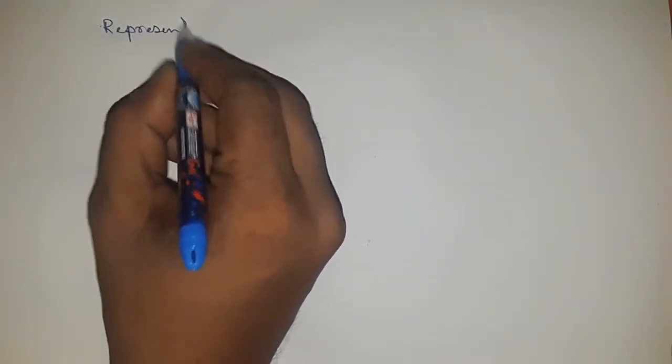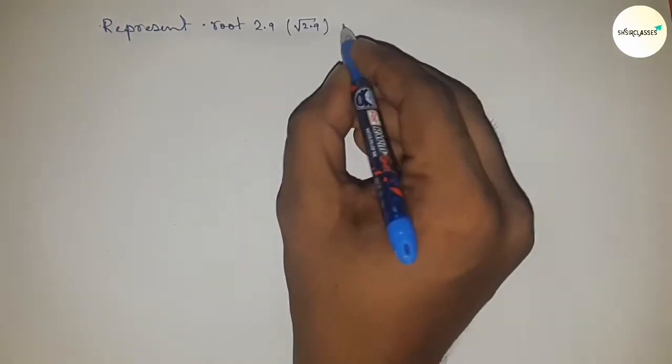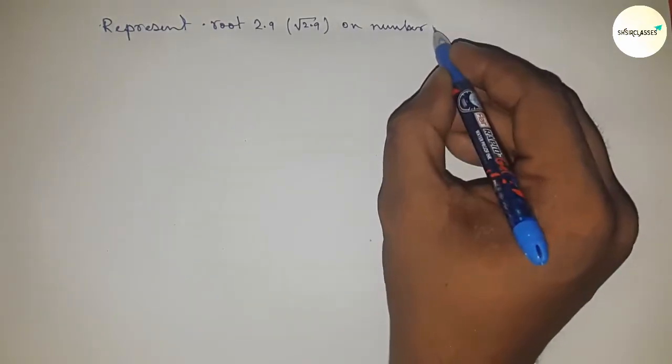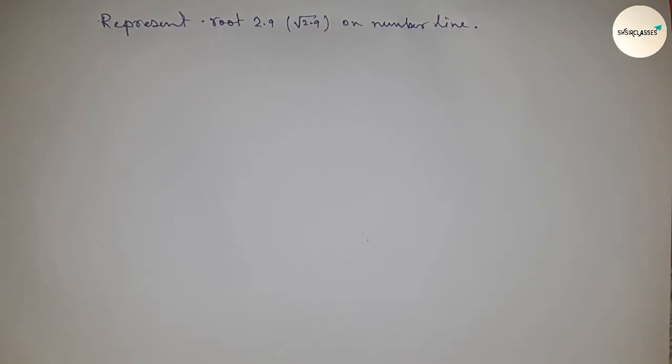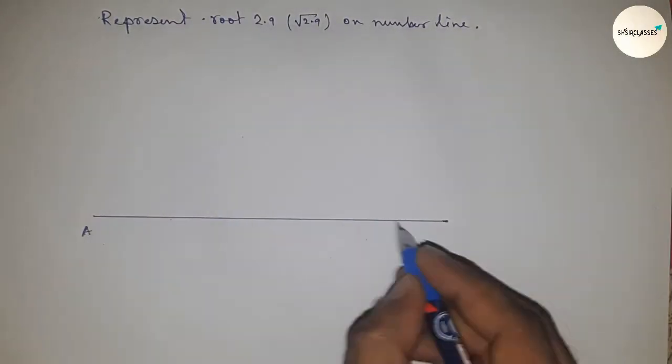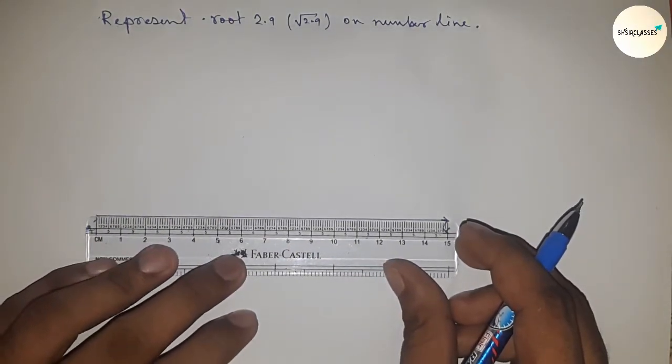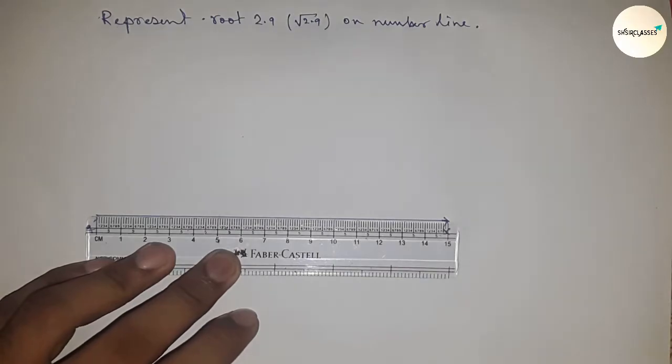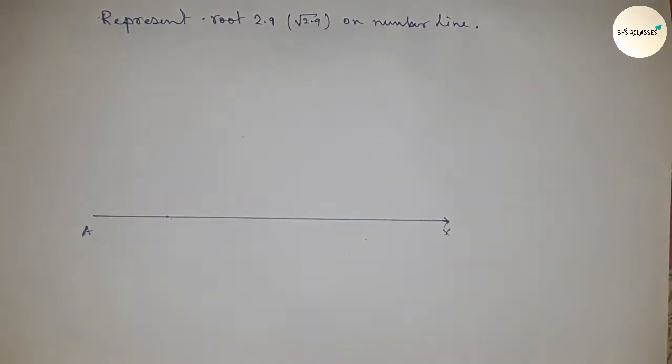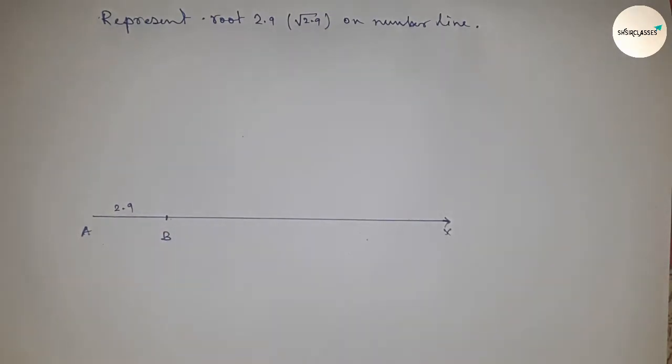Hi everyone, welcome to SSR Classes. Today we're talking about the representation of root 2.9 on a number line. Let's start by first drawing a line AX and then taking a distance of 2.9 centimeters using a scale. This is point B, so AB equals 2.9 centimeters.